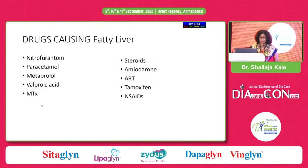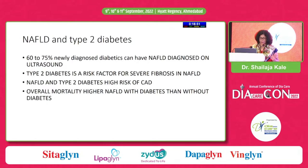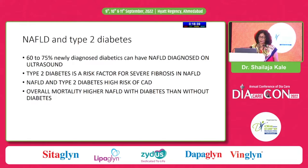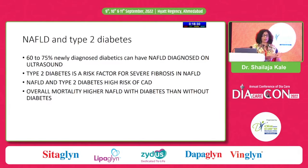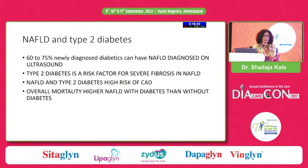We need to rule out what drugs the patient is on. If you take a type 2 diabetic patient, almost 75 to 80% will have NAFLD diagnosed on ultrasound, which may be fatty liver grade 1, 2, etc. But type 2 diabetes itself is a risk factor for severe fibrosis. A type 2 diabetic person who gets fatty liver has a higher chance of developing fibrosis, end-stage liver disease, more cardiovascular mortality, and greater overall mortality.